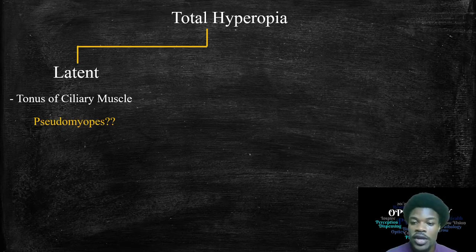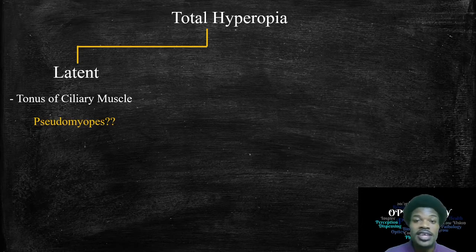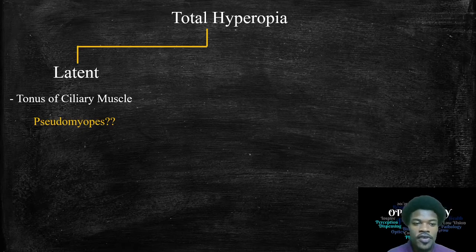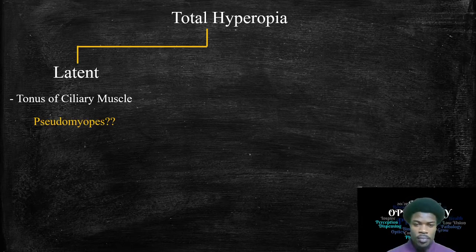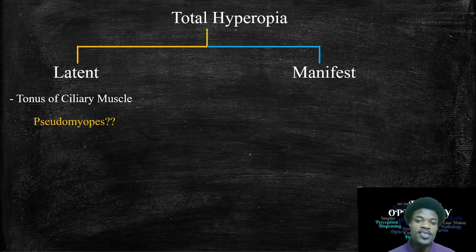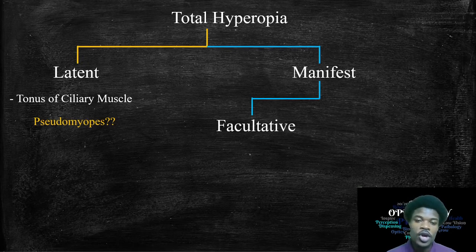With pseudomyopia you'd be getting more minus in your subjective refraction, whereas with latent hyperopia you're getting more plus. Importantly, latent hyperopia does not show up in routine refraction — you only discover how much latent hyperopia there is by doing a cycloplegic refraction. The second type that contributes to total hyperopia is manifest hyperopia, which is the hyperopia that shows up on dry or routine refraction — the plus that you find there.